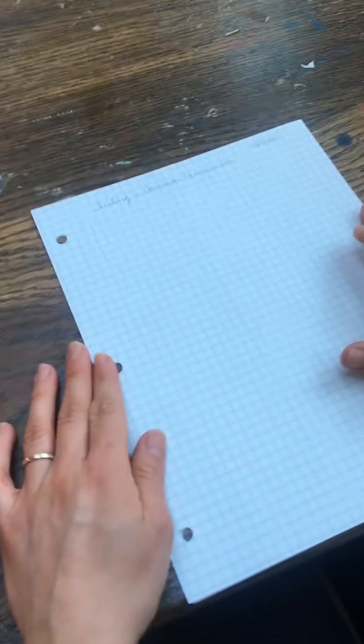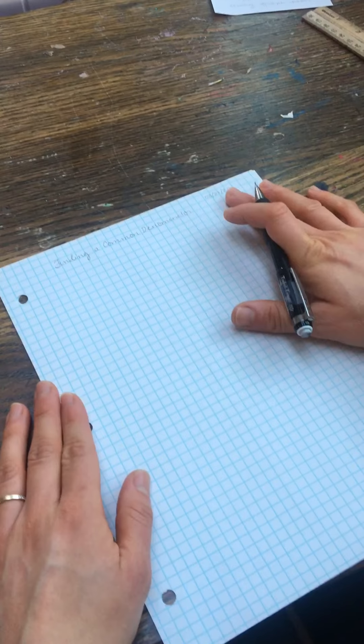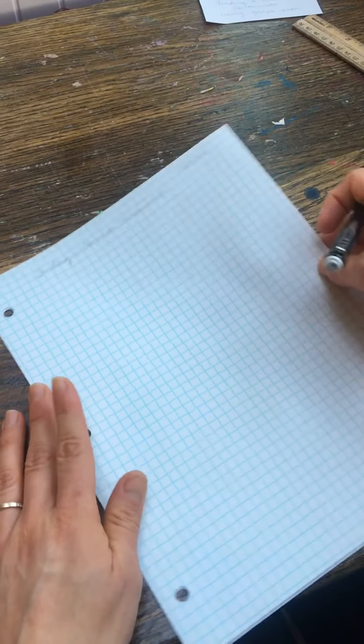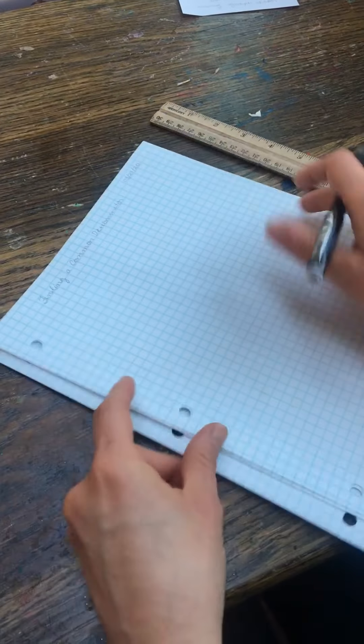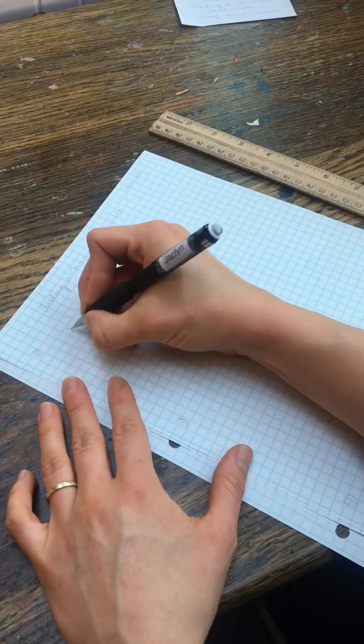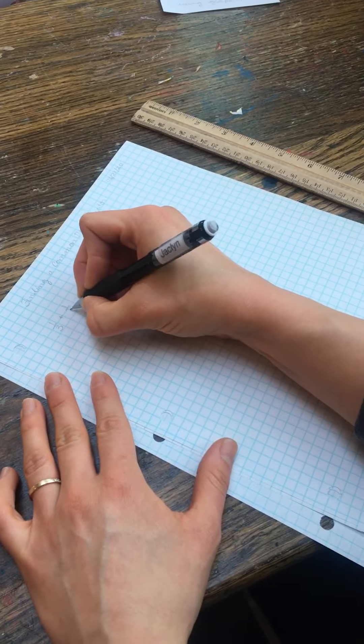All right, so once you're all ready, you can set up your page to say finding a common denominator. I have my date in the corner and I'm ready. So let's start with some fractions. I'm thinking of one-third plus one-fourth.